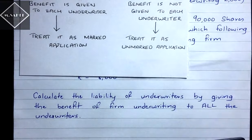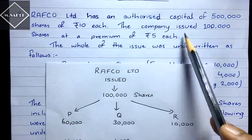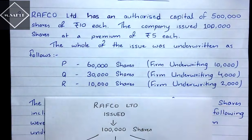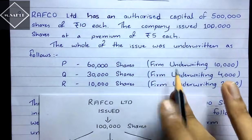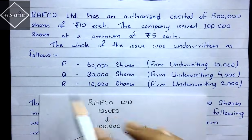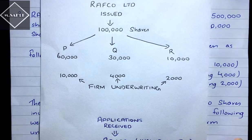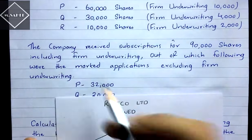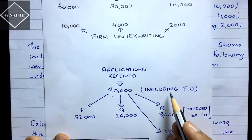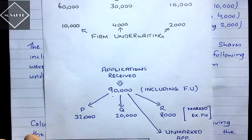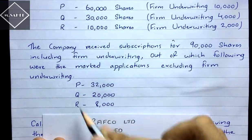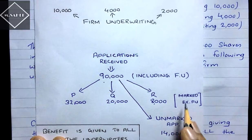Let's analyze the question. The company issued 1 lakh shares, underwritten by P: 60,000, Q: 30,000, R: 10,000. Firm underwriting: P — 10,000, Q — 4,000, R — 2,000. The company received 90,000 applications including firm underwriting. The marked applications given are excluding firm underwriting — so 32,000, 20,000, and 8,000 are the actual marked applications only.